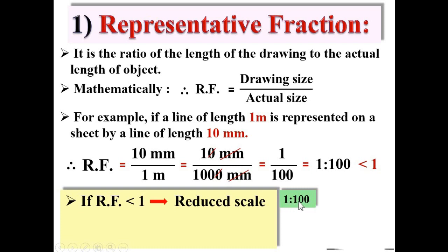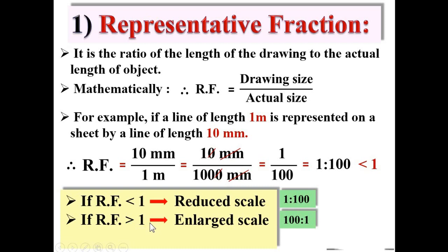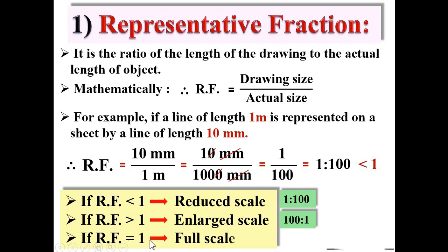If RF is less than 1, it is a reduced scale, for example 1:100 or 1:1000. If RF is greater than 1, it is an enlarged scale, for example 100:1. If RF equals 1, it is called full scale, represented as 1:1.